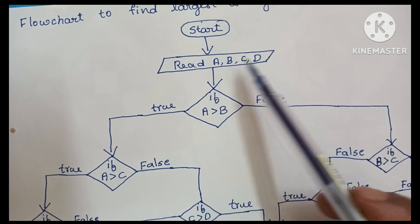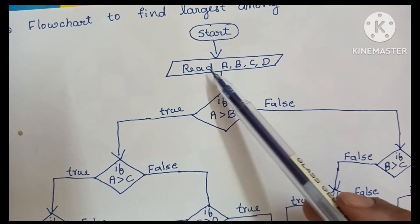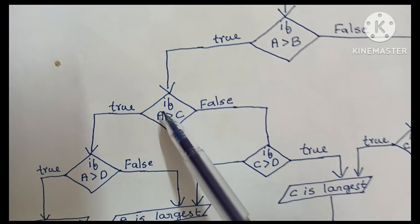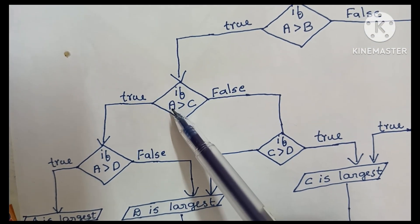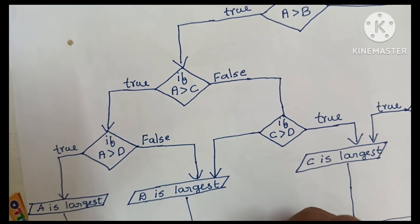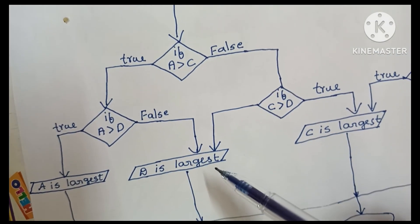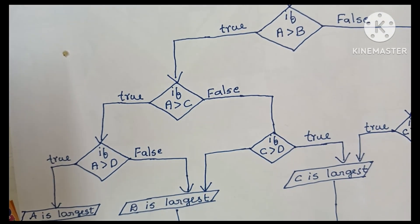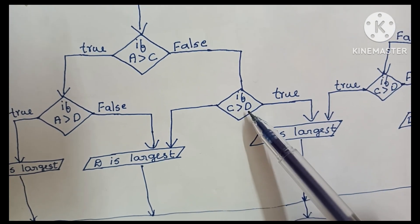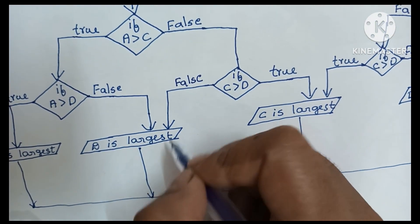So to recap: we start with a start statement inside an oval shape. Next, we read four variables A, B, C, D inside a parallelogram. Then we compare A greater than B. If true, we compare A greater than C. If true, we compare A greater than D. If true, we print 'A is largest'. If A greater than D is false, we print 'D is largest'. If A greater than C is false, we compare C with D, printing 'C is largest' or 'D is largest' accordingly.